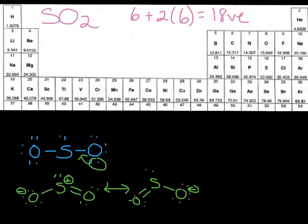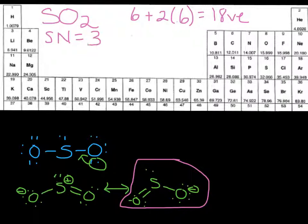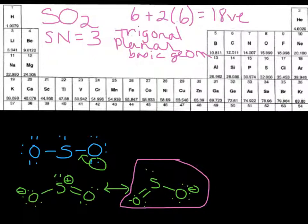Now let's just pick one of these resonance forms and look at the steric number. Doesn't matter though, you could pick either one. So the steric number for sulfur dioxide is three. So if you said three, you are right. And so that means it's a trigonal planar basic geometry. Those ideal bond angles are 120 degrees.